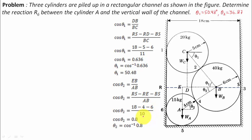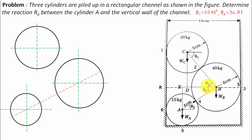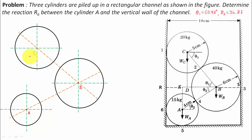Now let us make a free body diagram of all three cylinders A, B, and C. I'll set up the coordinate axes and draw the relevant construction lines, including the BC line. The bottom cylinder is A, the middle is B, and the top one is cylinder C.